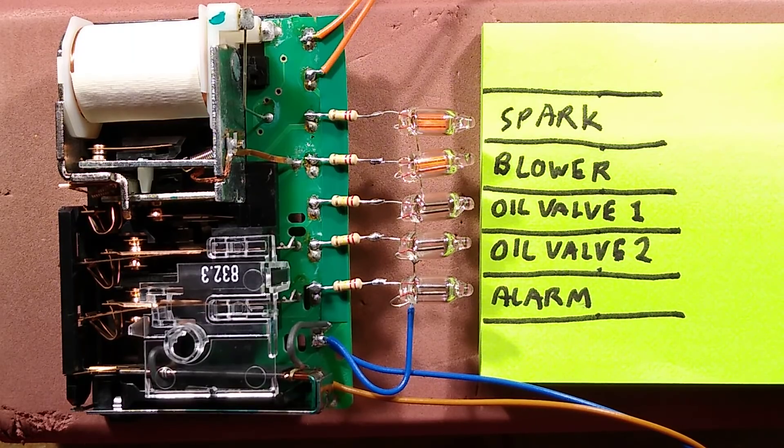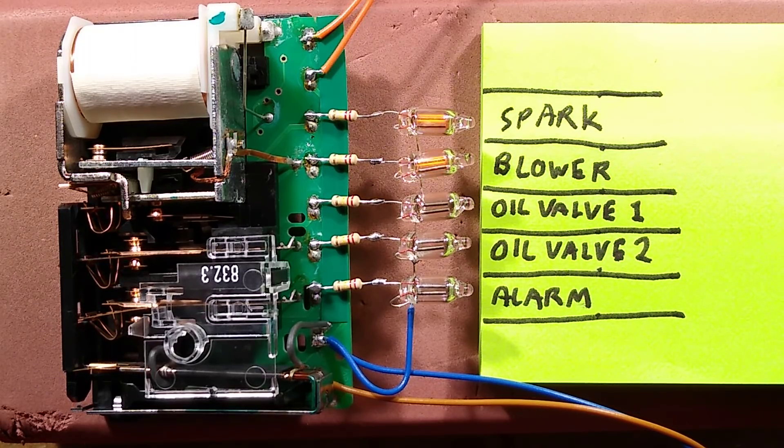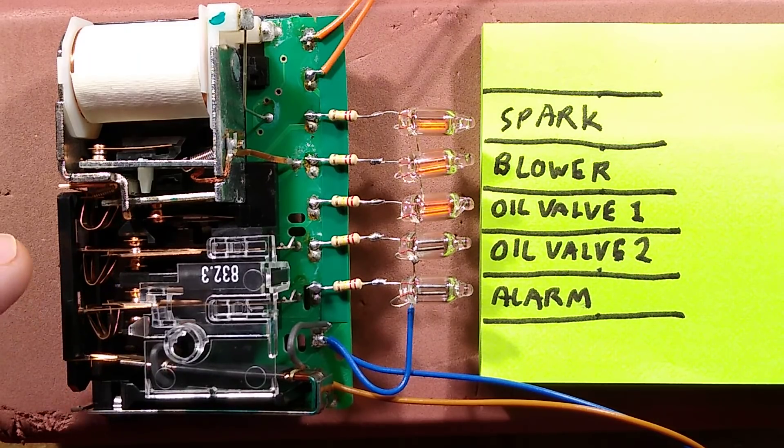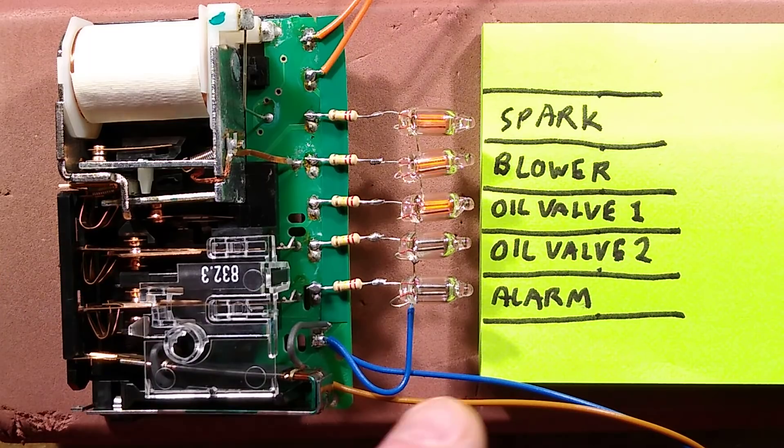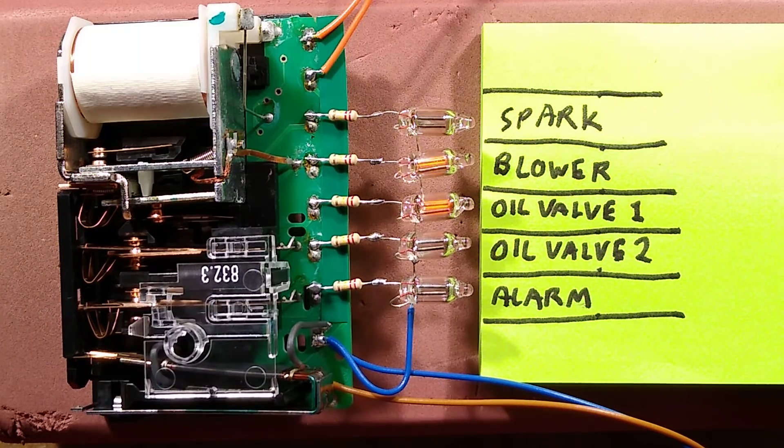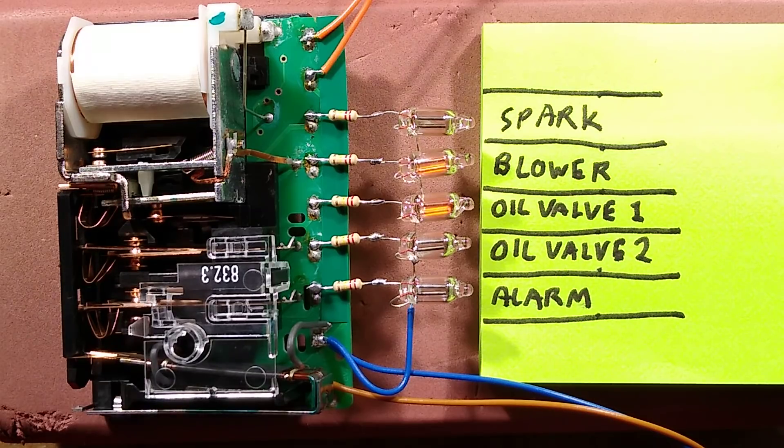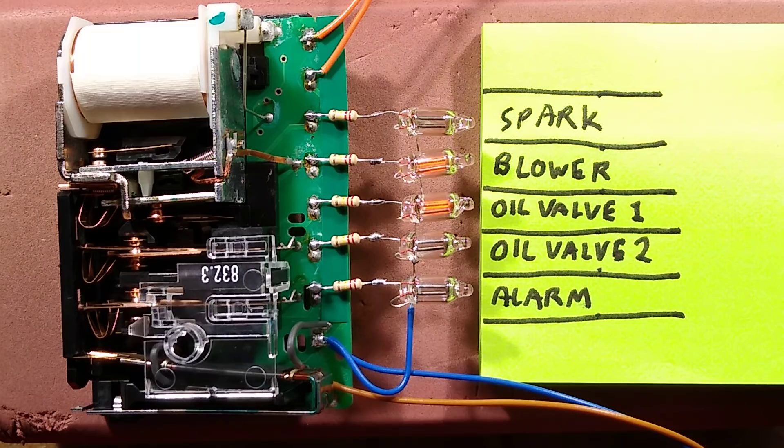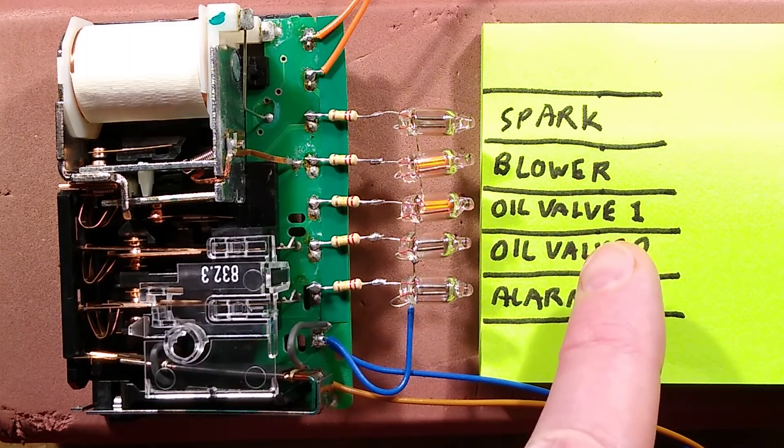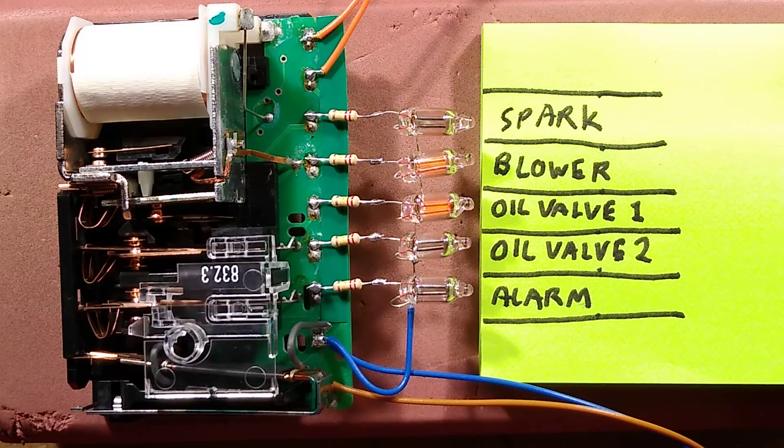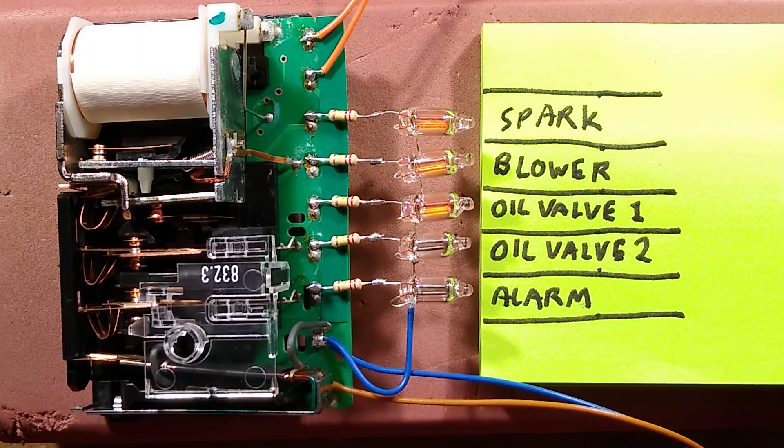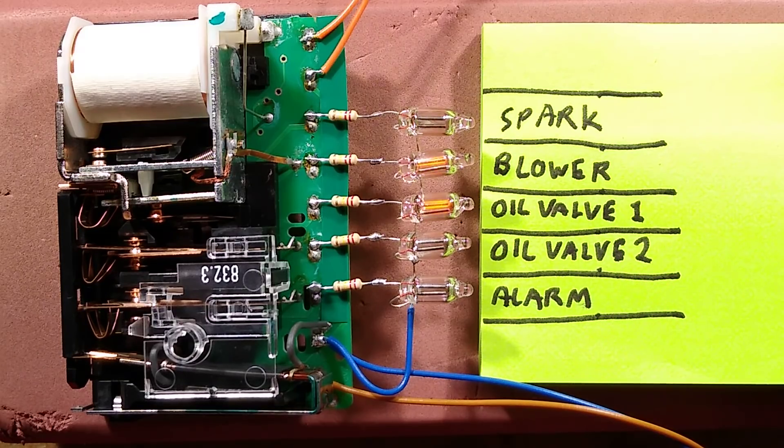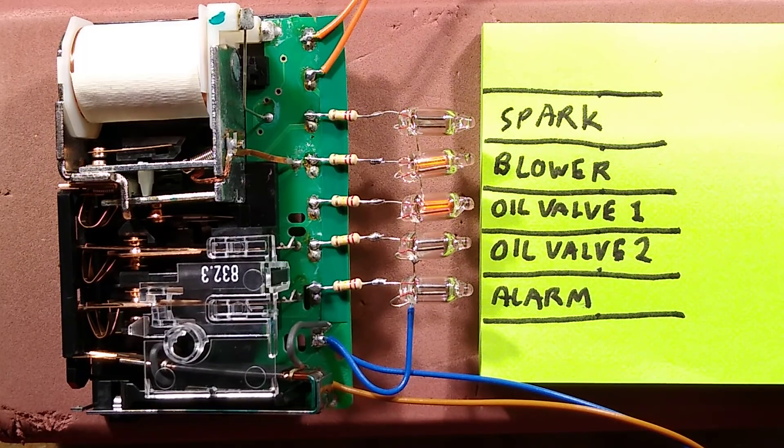So the first thing that happens is the blower is powered and the spark. The bimetallic strip is gradually moving across. You'll see this in greater detail later. It parks that contact. It's activated the oil valve one. I'm pushing the button. The magnetic, it's reached the end and released the magnetic trip. And now the system is resetting. It's cooling down and the blower and the oil valve are running. It's monitoring the flame. If I was to release this, it would start the spark again and it would try and restart the ignition sequence until it lit.